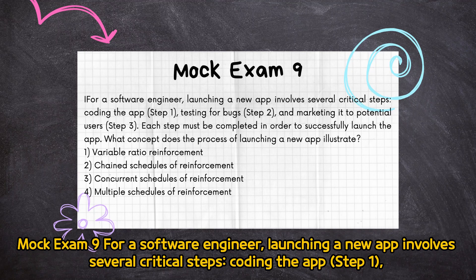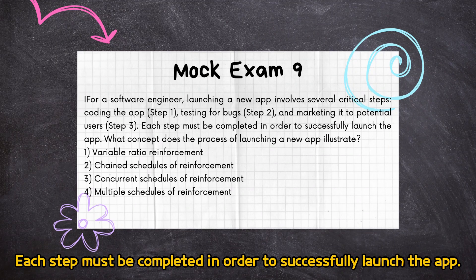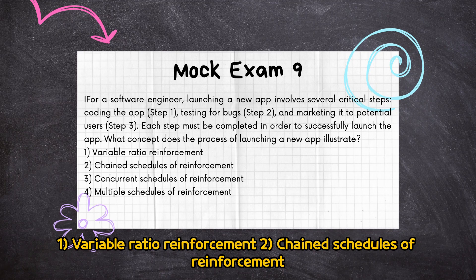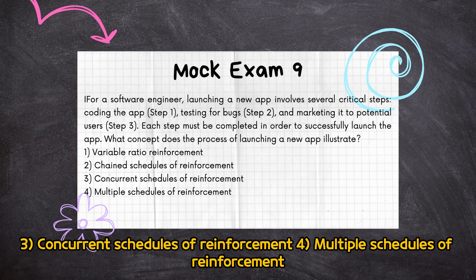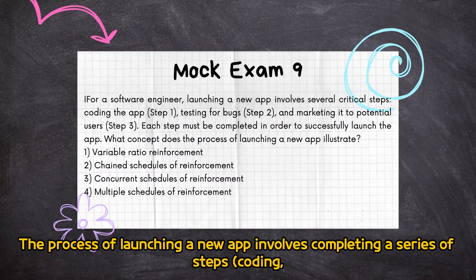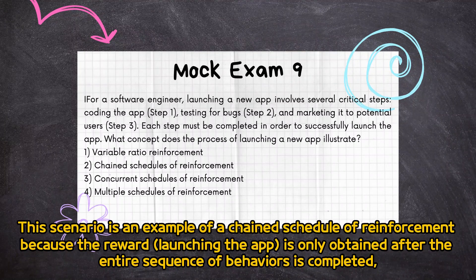Mock Exam 9: for a software engineer, launching a new app involves several critical steps — coding the app (Step 1), testing for bugs (Step 2), and marketing it to potential users (Step 3). Each step must be completed in order to successfully launch the app. What concept does the process of launching a new app illustrate? (1) Variable ratio reinforcement, (2) Chain schedules of reinforcement, (3) Concurrent schedules of reinforcement, (4) Multiple schedules of reinforcement. Correct answer is 2: chain schedules of reinforcement. The process of launching a new app involves completing a series of steps — coding, testing, marketing — in a specific order, with the successful completion of each step required to proceed to the next. The reward (launching the app) is only obtained after the entire sequence of behaviors is completed.